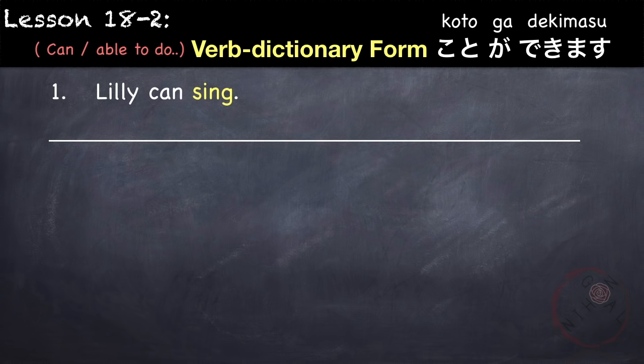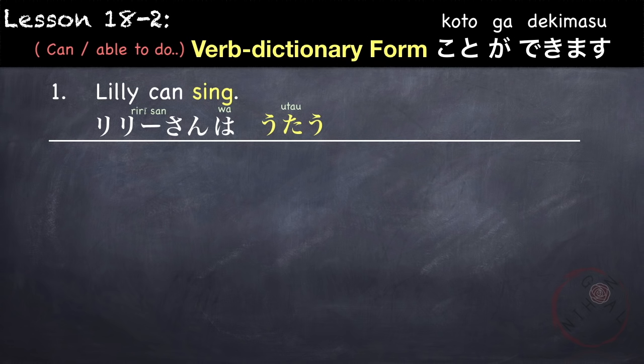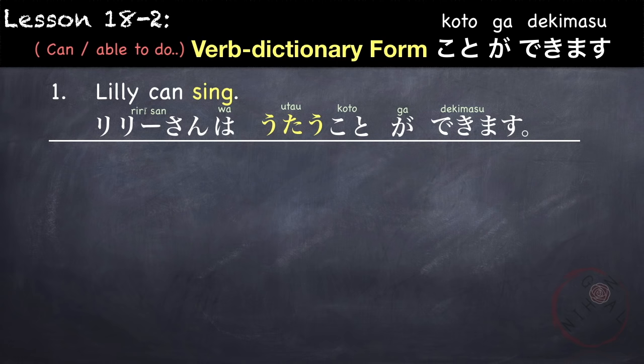For example: Lily can sing. Our topic is Lily, so Lily-san wa. Our verb is 'to sing' which is utaimasu. In dictionary form it is utau, and utau koto means 'singing' — so our verb becomes a noun. Lily-san wa utau koto ga dekimasu. Literally this means that Lily is capable of singing.